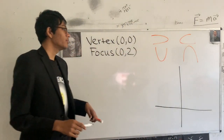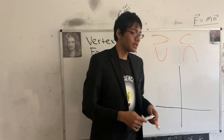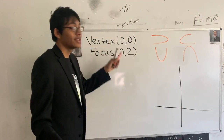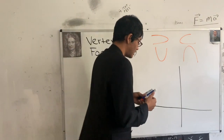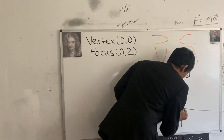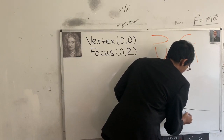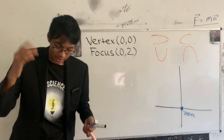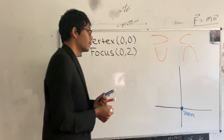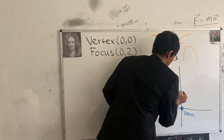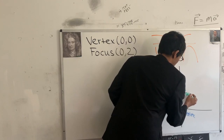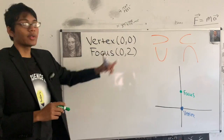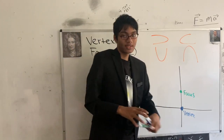Let's draw the xy-plane. I drew the y-axis quite low because we're dealing with primarily positive coordinates. The vertex is at the origin, at (0, 0) — so here is the vertex of my parabola. I also know the focus, and the focus of my parabola is right here at (0, 2).